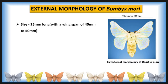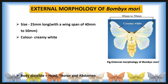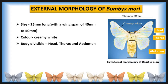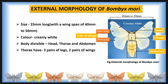The adult moth of Bombyx mori is about 25 mm long with a wingspan of 40 mm to 50 mm from side to side and a fair body. The moth is white and creamy white in color. The body is divided into three regions: head, thorax, and abdomen.